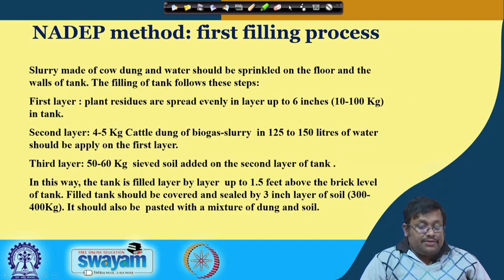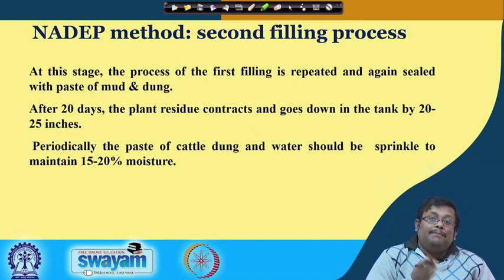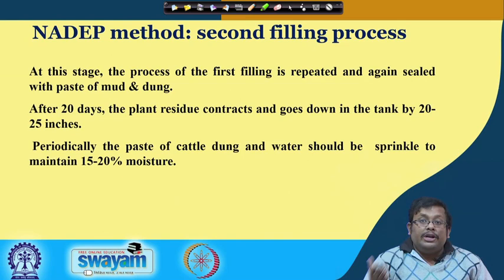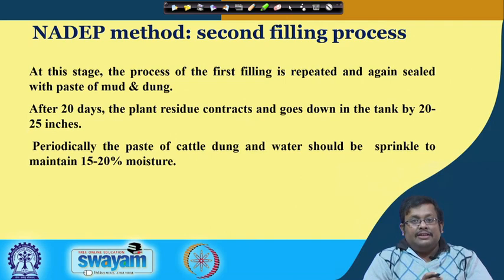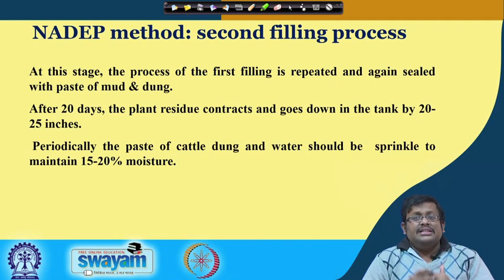For the second filling, the process of the first filling is repeated again and sealed with paste of mud and dung. After 20 days, the plant residues contract and go down in the tank by 20 to 25 inches because decomposition reduces both volume and weight. Periodically, a paste of cattle dung and water should be sprinkled to maintain 15 to 20 percent moisture. This is the second filling method for NADEP compost.